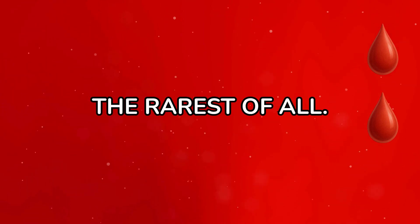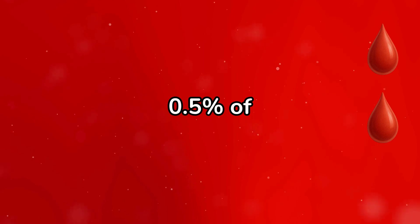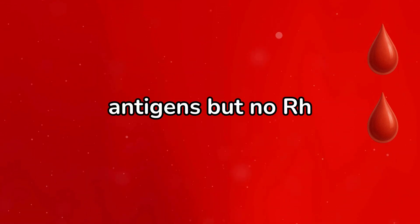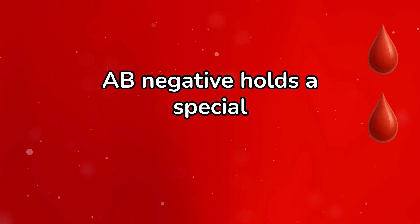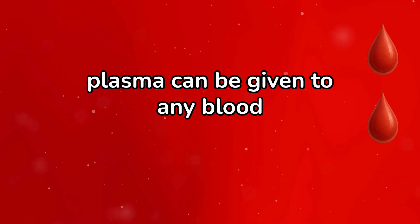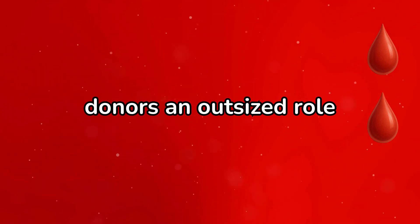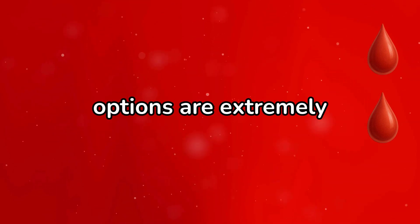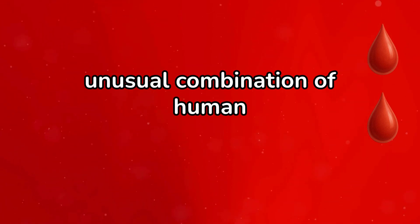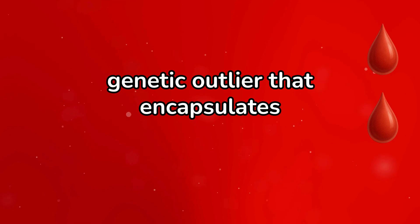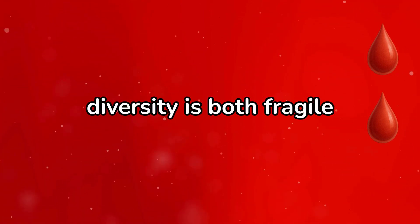AB negative, the rarest of all. AB negative is the rarest blood type on Earth, found in less than 0.5% of people. Its red cells carry both A and B antigens but no RH factor, making it the ultimate rarity among human phenotypes. Despite its scarcity, AB negative holds a special place in medicine: its plasma can be given to any blood type, making it the universal plasma donor. This gives AB negative donors an outsized role in saving lives, even though their own transfusion options are extremely limited. Evolutionarily, AB negative represents the most recent and unusual combination of human antigens — a true genetic outlier that encapsulates millennia of mixing between ancient populations. Its existence reminds us that even in biology, diversity is both fragile and invaluable.